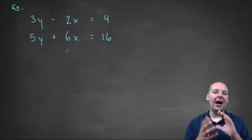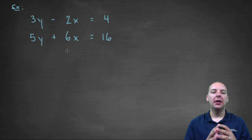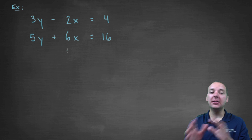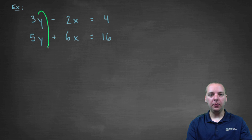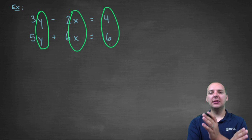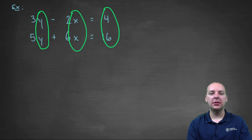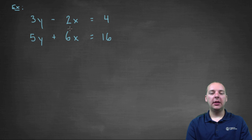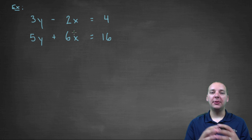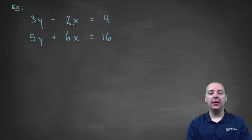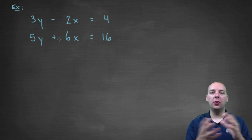This kind of looks like the standard form we had, though it's not x's then y's then constants — but that's fine, because what we really want is y's in a column, x's in a column, and constants in a column. So we're going to leave it this way. Next, we need to make the coefficients of either the x's or the y's be the same numerical value but with opposite sign. We have a three, a negative two, a five, and a six. Could you turn a two into a six? Yes — so we're going to multiply the top equation by three to get negative six x, matching the positive six x in the second equation.